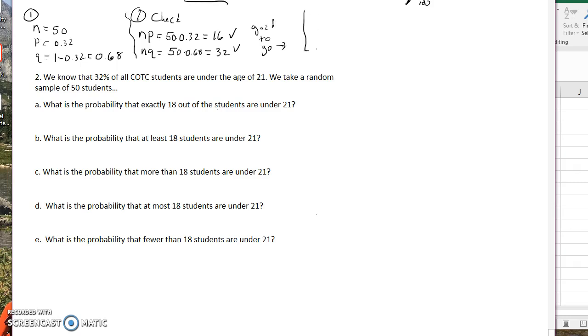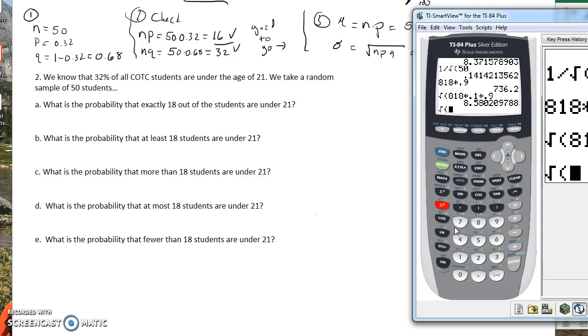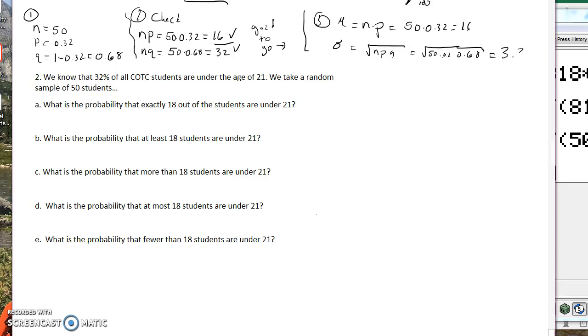We're going to go on to the next step. Step three is going to be to find the mean and the standard deviation. Remember the mean is n times p, which you actually just did right here, and that was 50 times 0.32, which is 16. Standard deviation, square root of npq, so that would be square root of 50 times 0.32 times 0.68, which is 3.30.